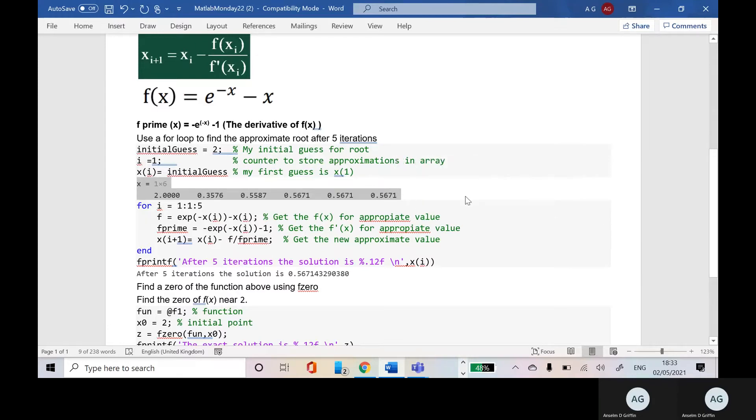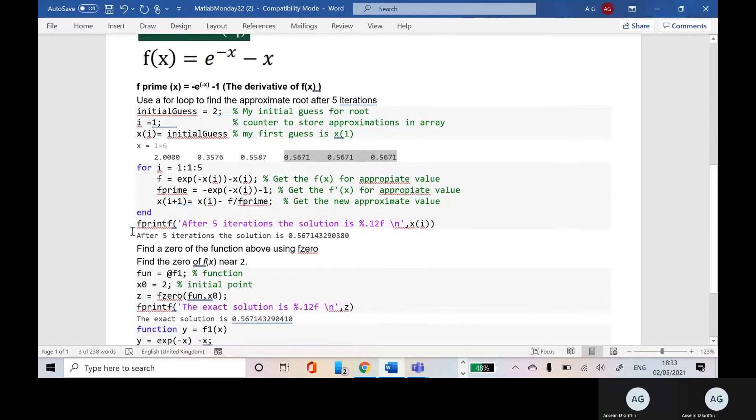The last three look the same, and that's because I've only printed the four decimal places there, but we'll see that when I get to the fifth iteration, the sixth value I've printed to 12 decimal places.